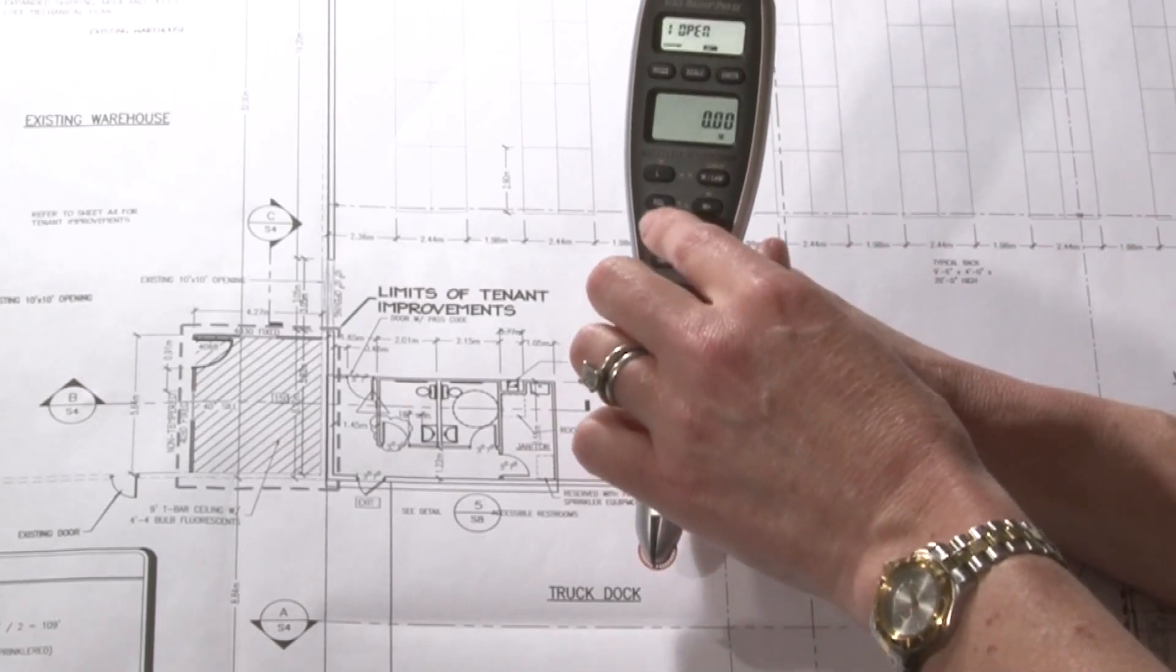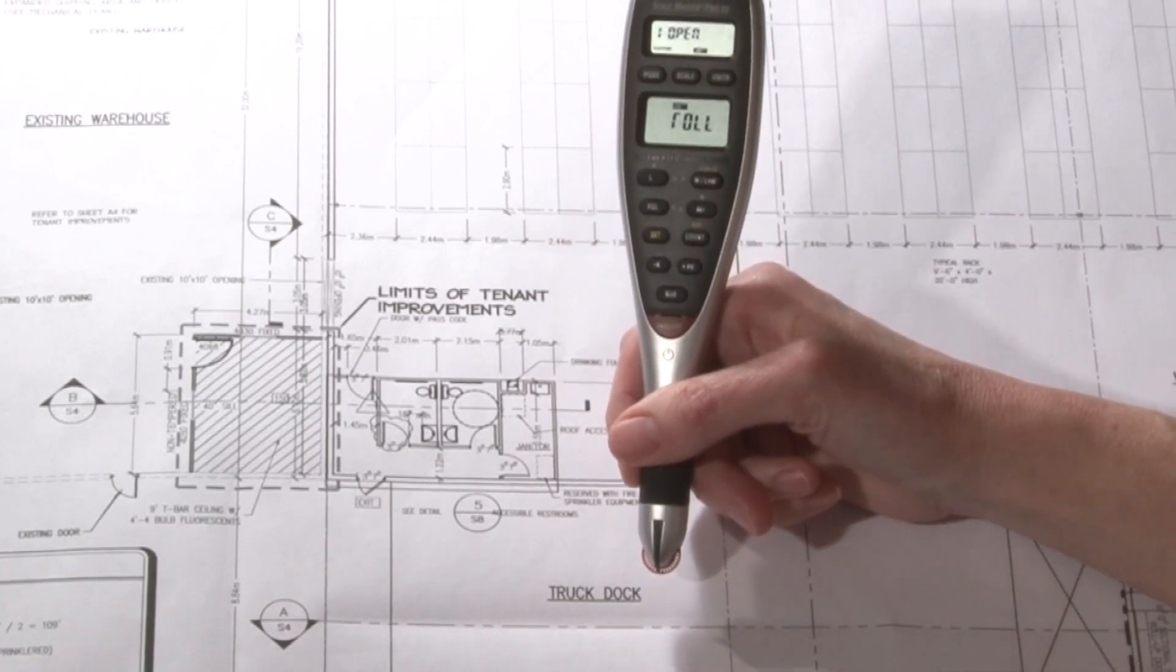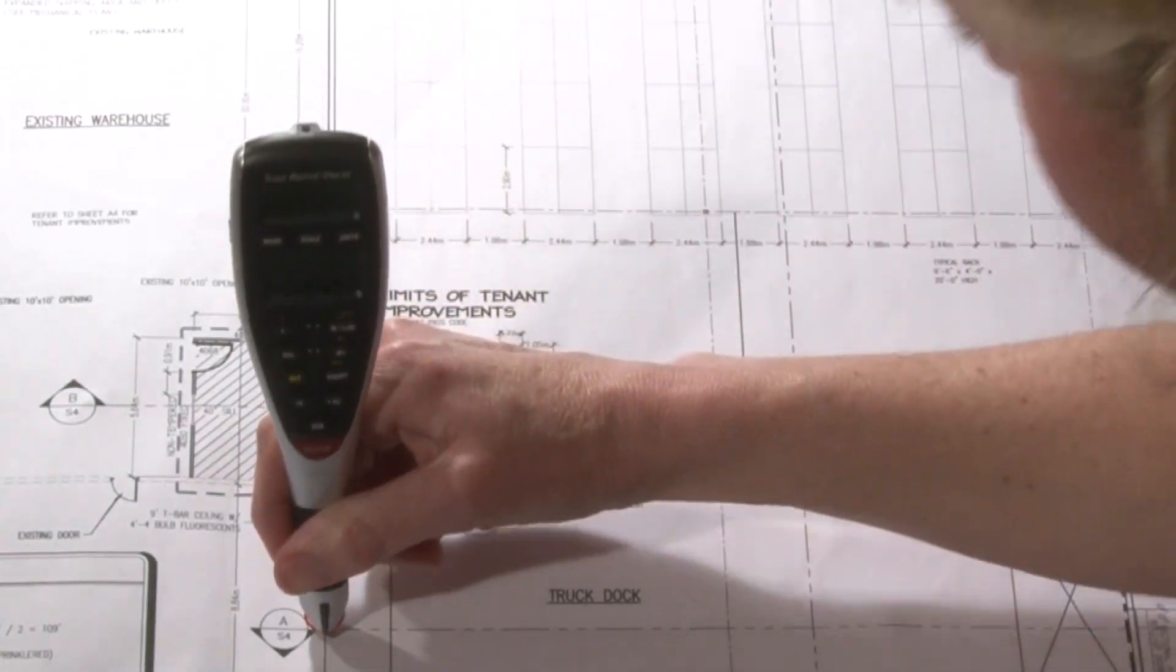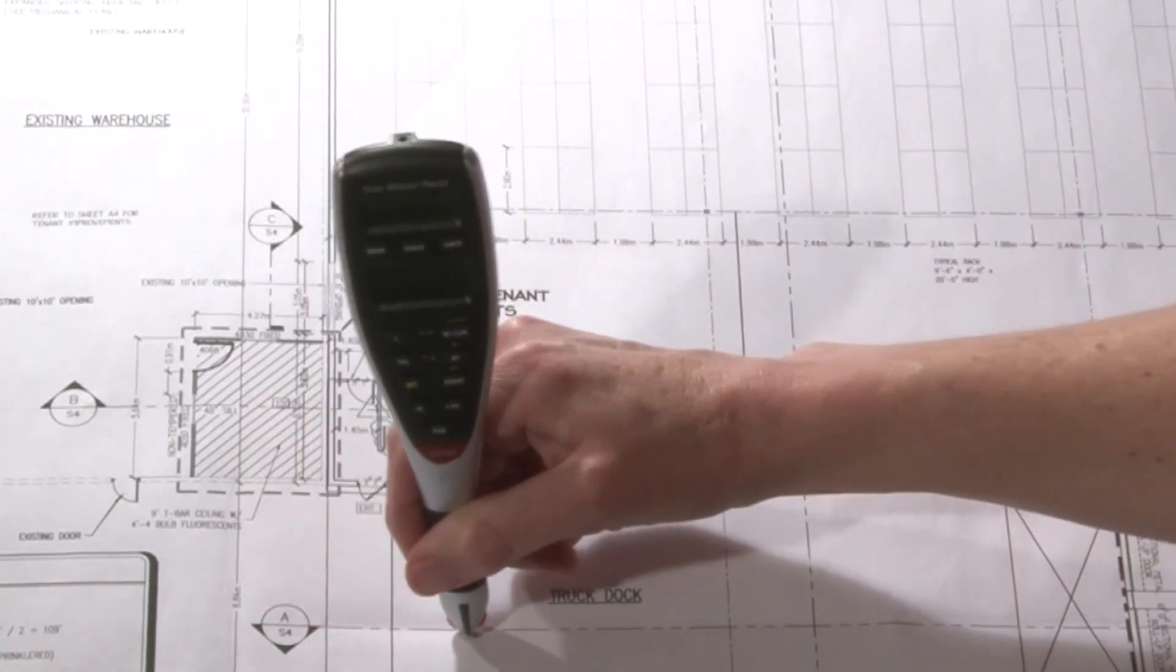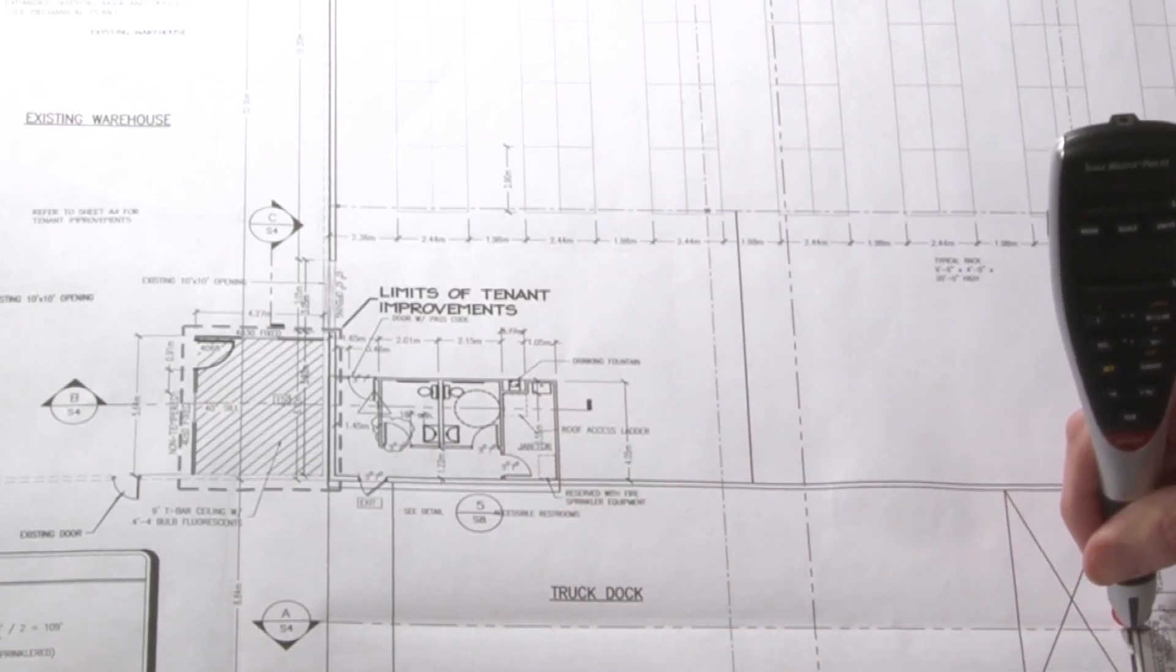Then I press set, scale, and it's prompting me to roll that length. I line up my cursor and roll that length until I get to the end, and then lift.